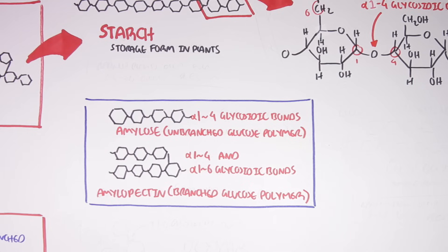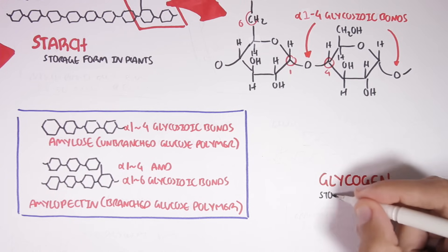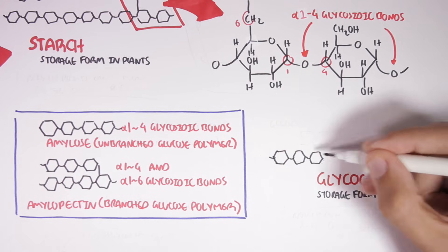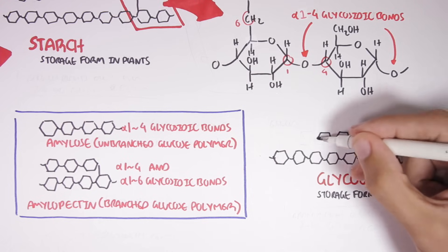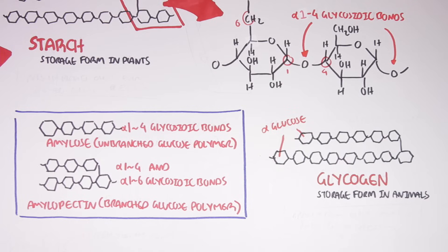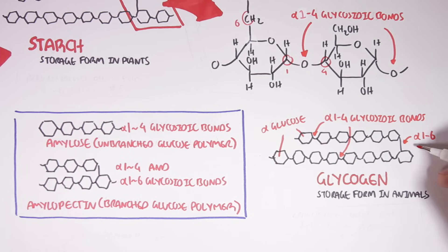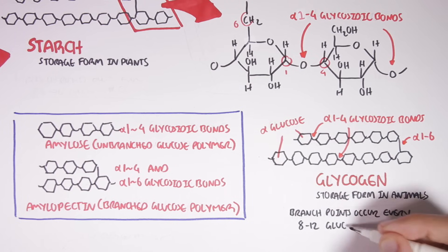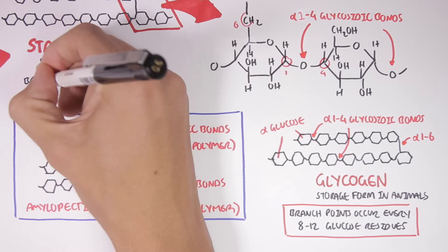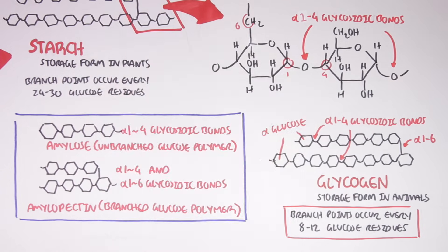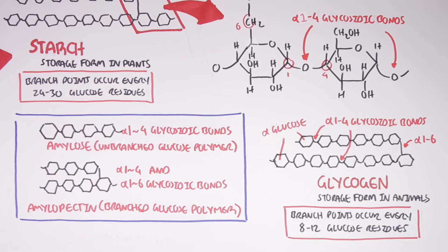Another good example of a polysaccharide is glycogen. Glycogen is a homopolysaccharide made up of glucose, and it can also be branched or unbranched. Glycogen is a storage form of glucose in animals such as humans. Starch and glycogen are very similar in structure — both made up of glucose and containing amylose and amylopectin. The key difference is that glycogen has branch points every 8 to 12 glucose residues, whereas in starch, branch points occur every 24 to 30 residues. So branching is more frequent in glycogen, which influences its overall structure.